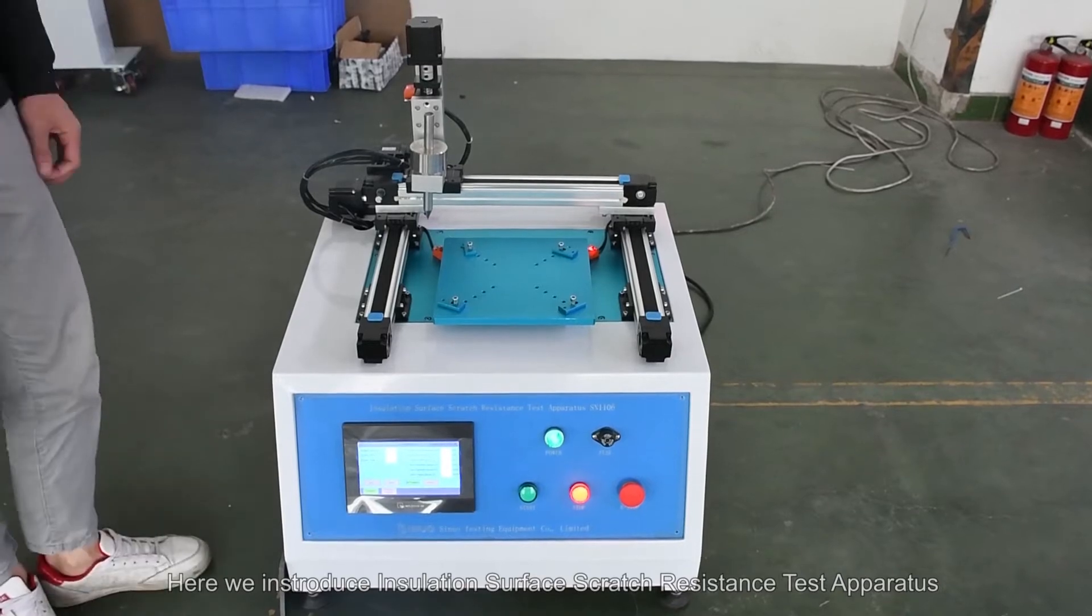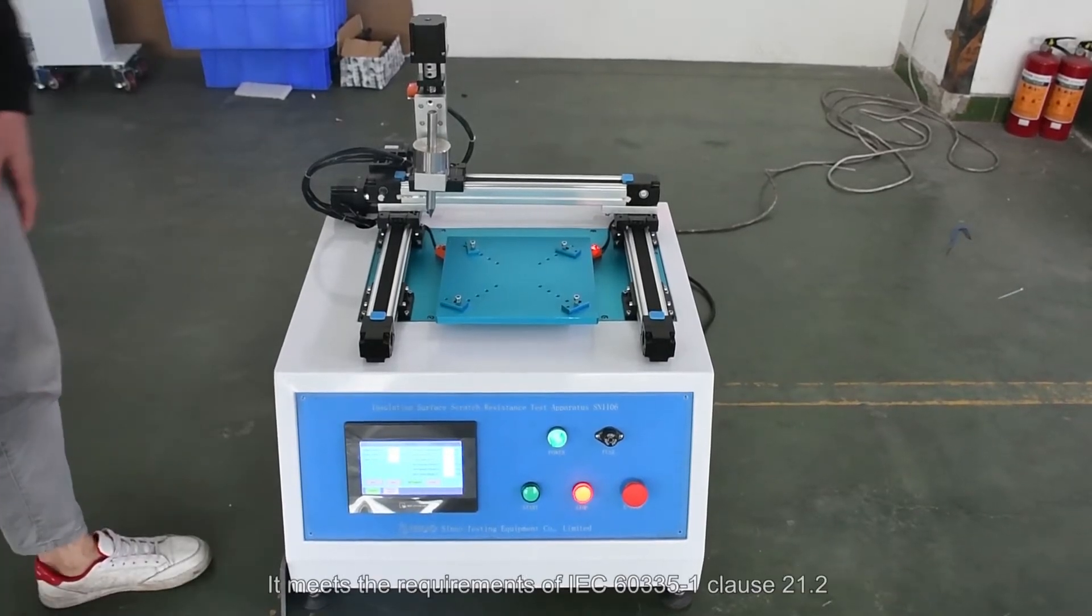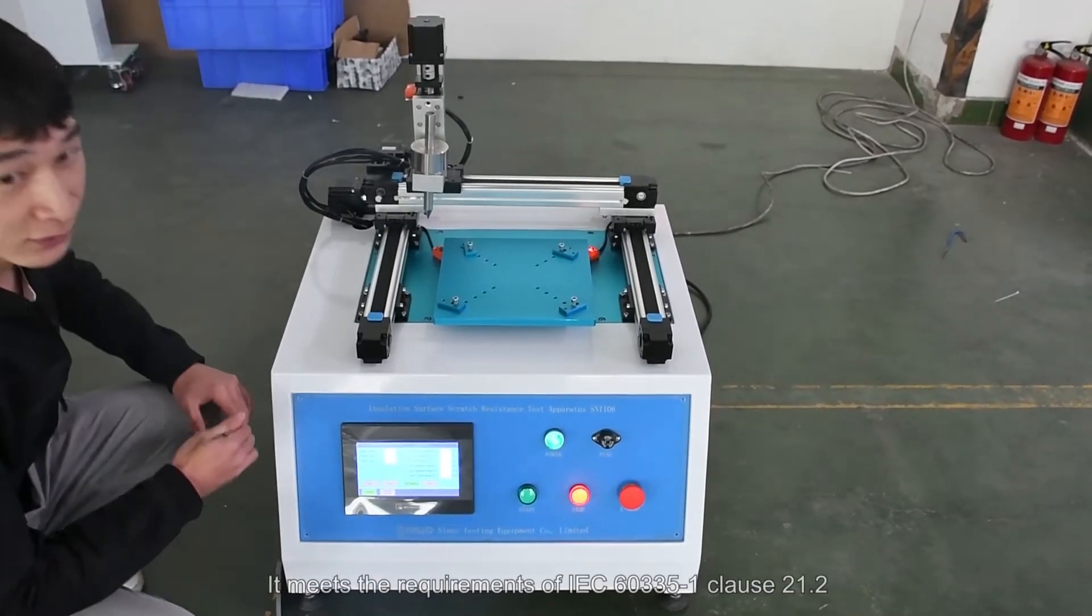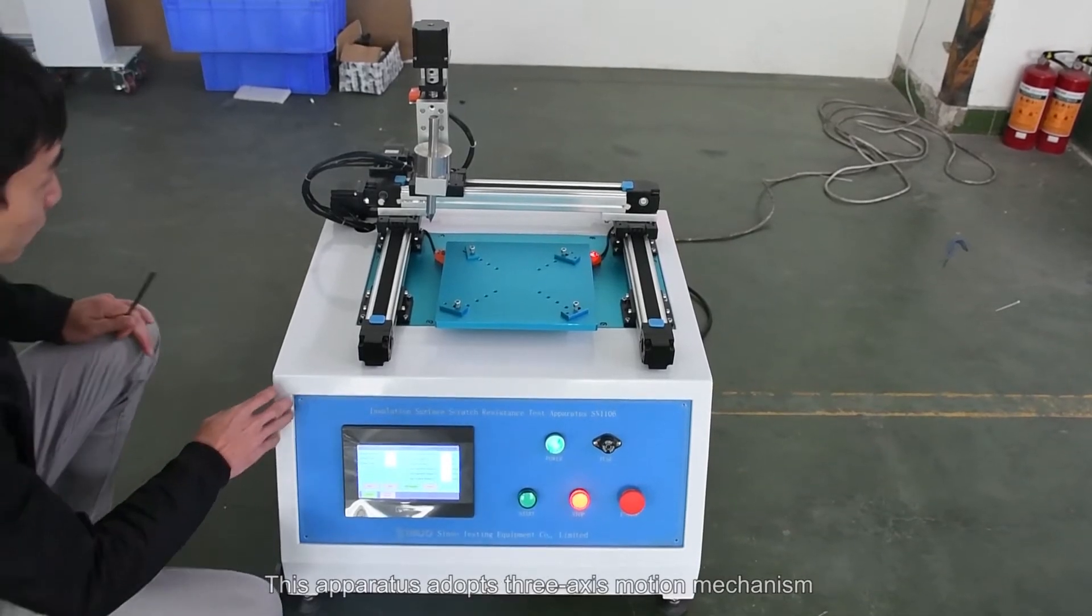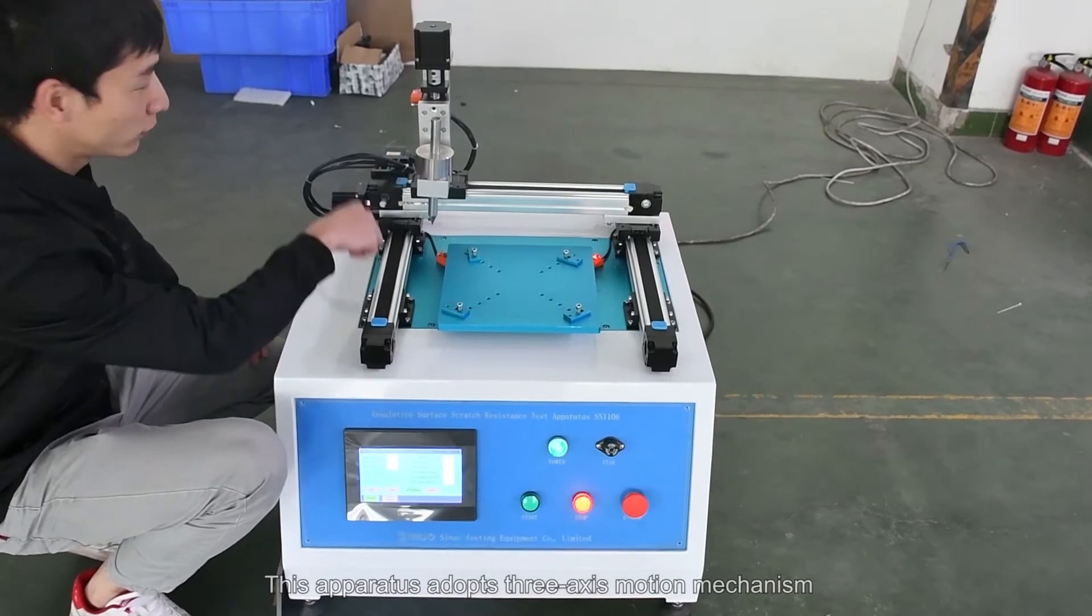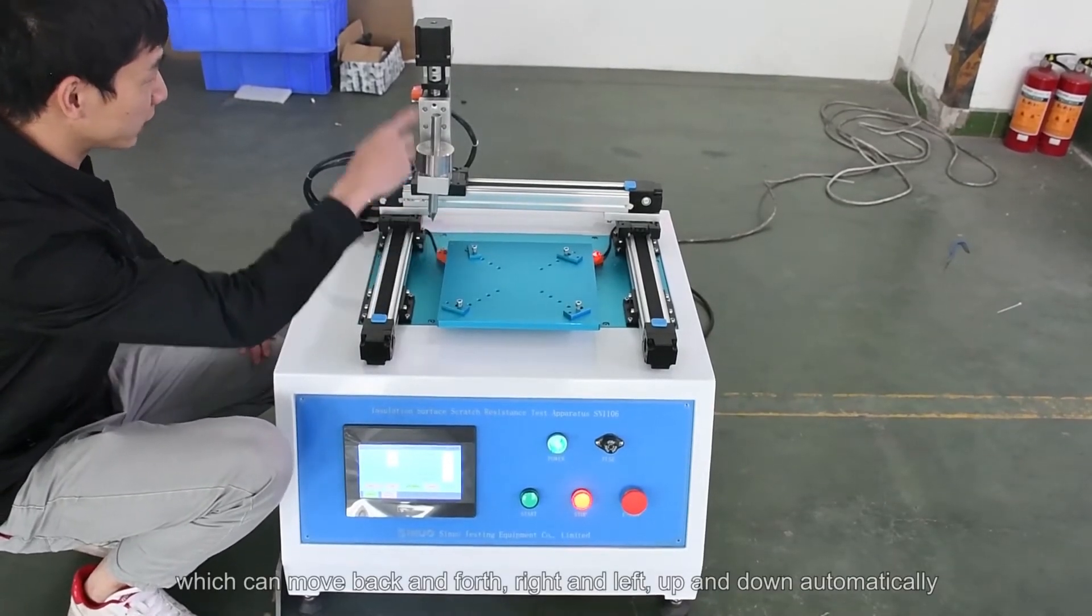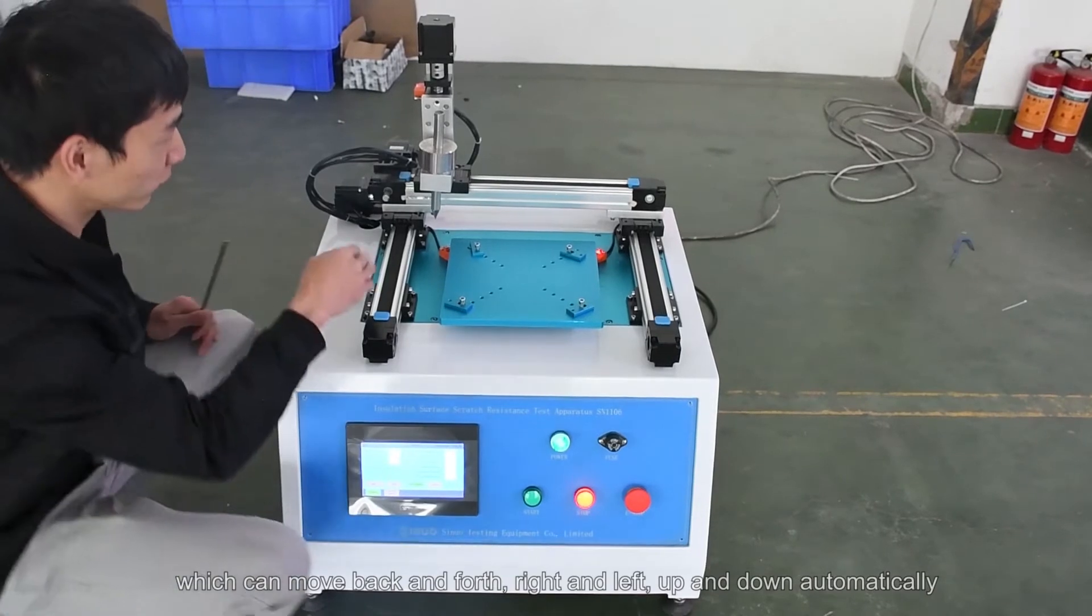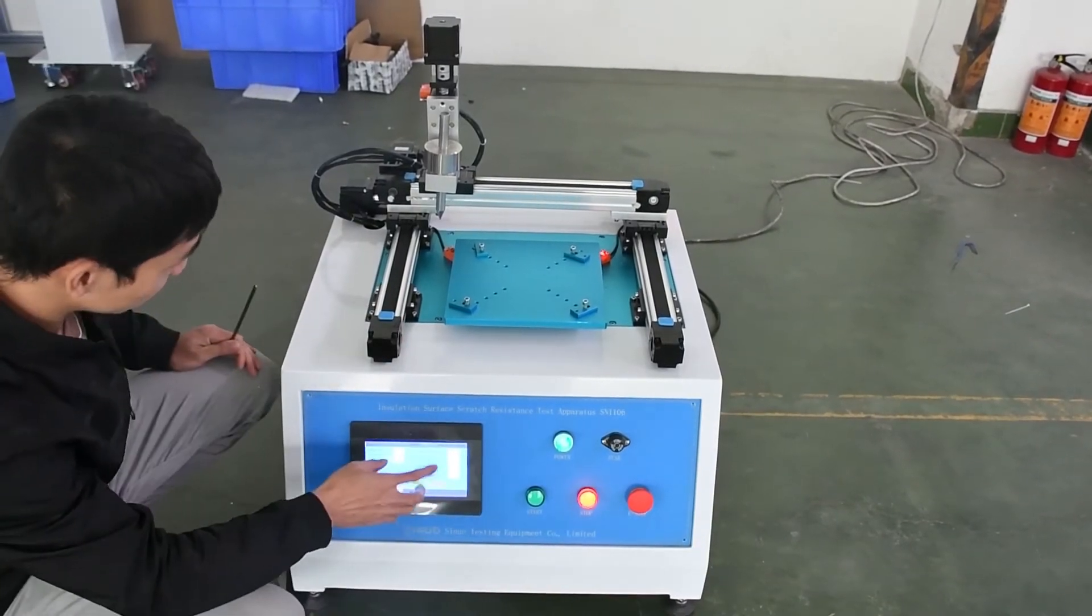Here we introduce insulation surface scratch resistance test apparatus. It meets the requirements of IEC 60335-1 clause 21.2. This apparatus adopts three axis motion mechanism which can move back and forth, right and left, up and down automatically.